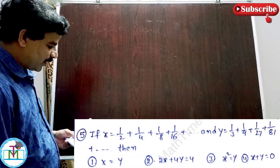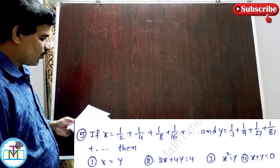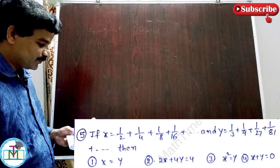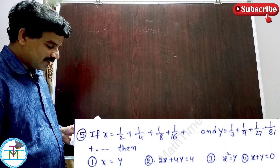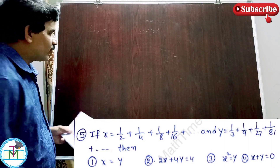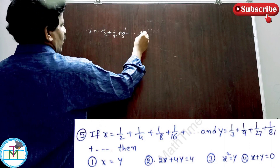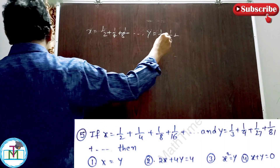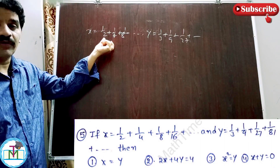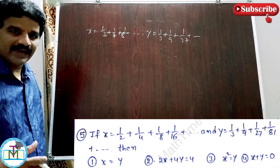Question number 5: x equals 1/2 plus 1/4 plus 1/8 plus 1/16 and so on, and y equals 1/3 plus 1/9 plus 1/27 and so on — both are geometric progressions. Which of the following is correct? Option 1: x equals y; option 2: 2x plus 4y equals 4; option 3: x squared equals y; option 4: x plus y equals 0. Both x and y are sums of infinite terms of a GP.